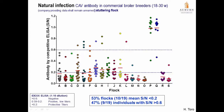Several flocks show a few animals that are negative for CAB antibodies. In general, 53 percent of flocks — 10 of 19 — show SN ratios less than 0.2. But 47 percent, so 9 of 19, show individuals with SN ratios higher than 0.6, meaning they are negative for CAB antibodies. This is a problem because these birds will be susceptible to infection during the laying period and may transmit the virus to the progeny.